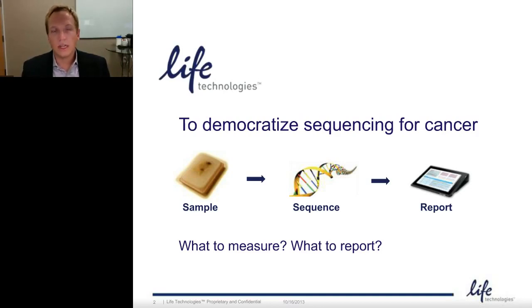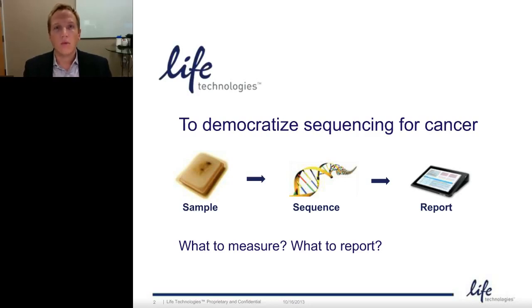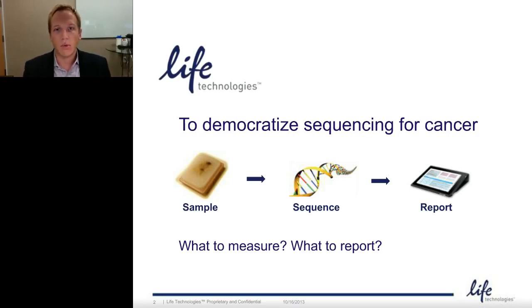The two key questions we're going to address today, given the state of next generation sequencing and sequencing in cancer, are: what are the genes and the specific regions of genes that we need to measure — what are the most relevant, informative genes? And then ultimately, what would we like to report out when a cancer sample is positive for a particular genetic alteration? We're going to talk about our bioinformatics strategy to really leverage all of the world's content, all of the information available in the public domain, to answer those two important questions.